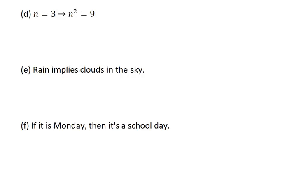For the first one, we have n equals 3 implies n squared equals 9. That little arrow is the same as saying the word implies. And you'll see that arrow a lot in mathematics, especially as you go on to higher math.